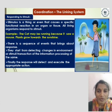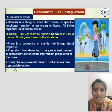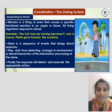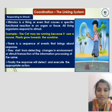For example, a cat may be running because it saw a mouse. Plants grow towards the sunshine. There is a sequence of events that brings about a response, starting from detecting changes in the environment or stimuli, to the transmission of information, and then processing of the same.